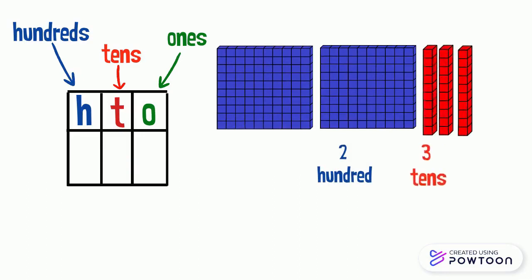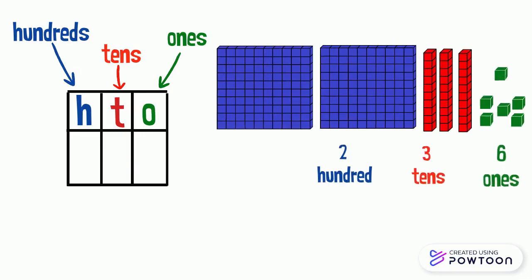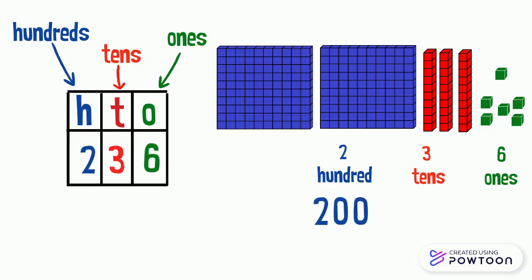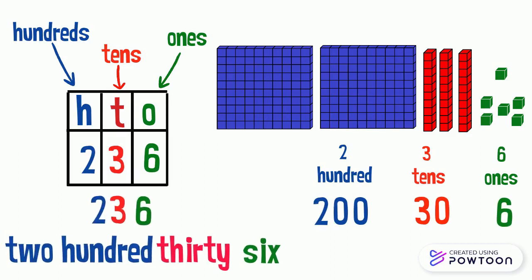Two hundred, three tens, and six ones. We will write two in the hundreds place, three in the tens place, and six in the ones place. Two blocks of hundred equals two hundred, three tens equals thirty, six ones equals six. Two hundred thirty-six.